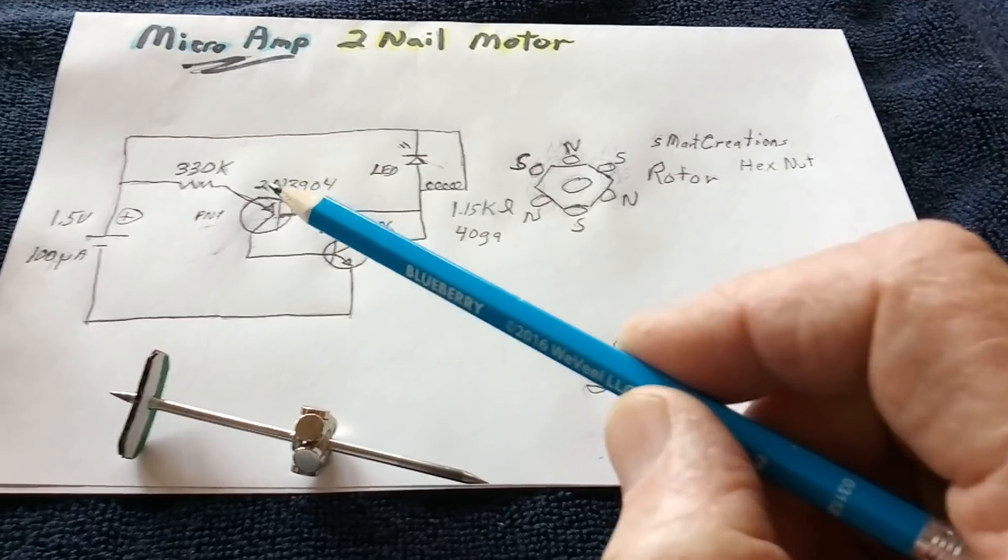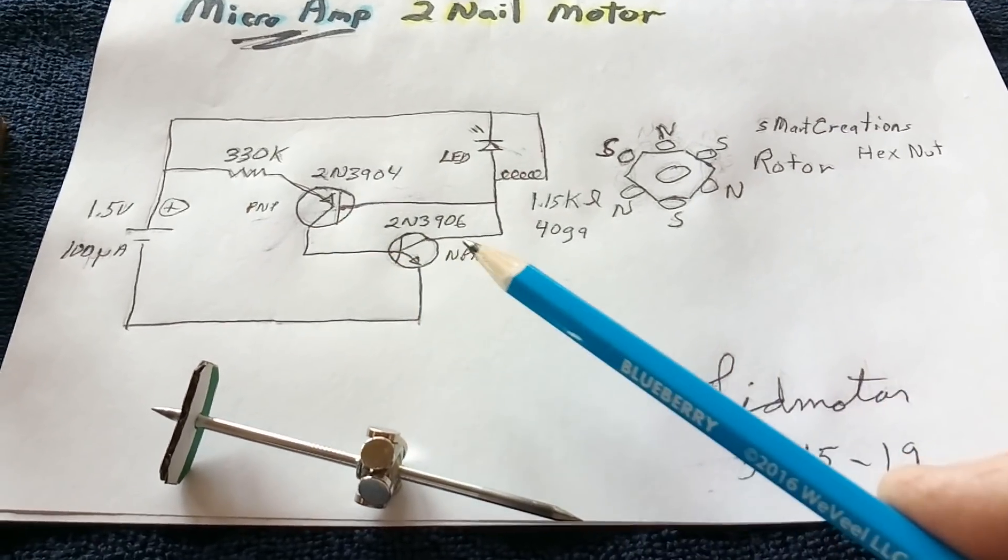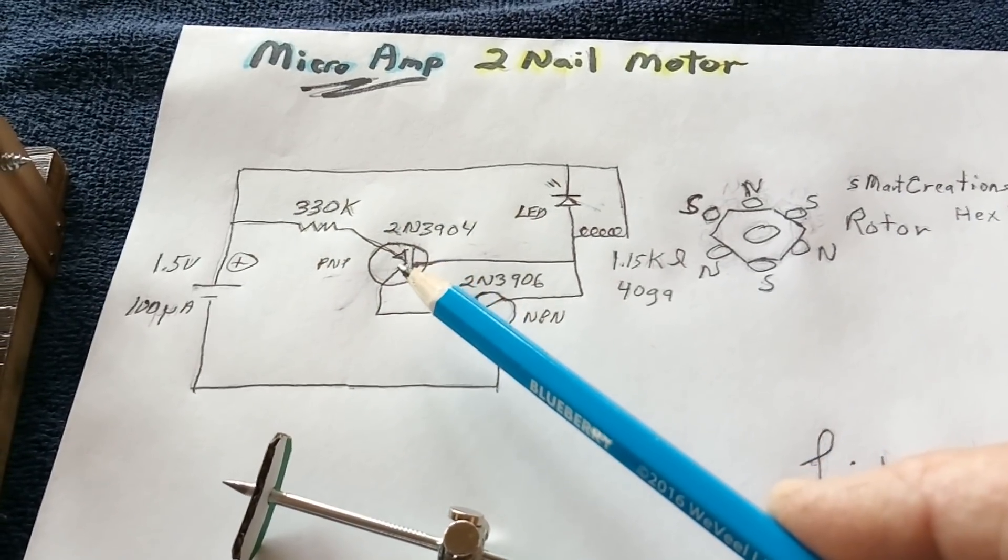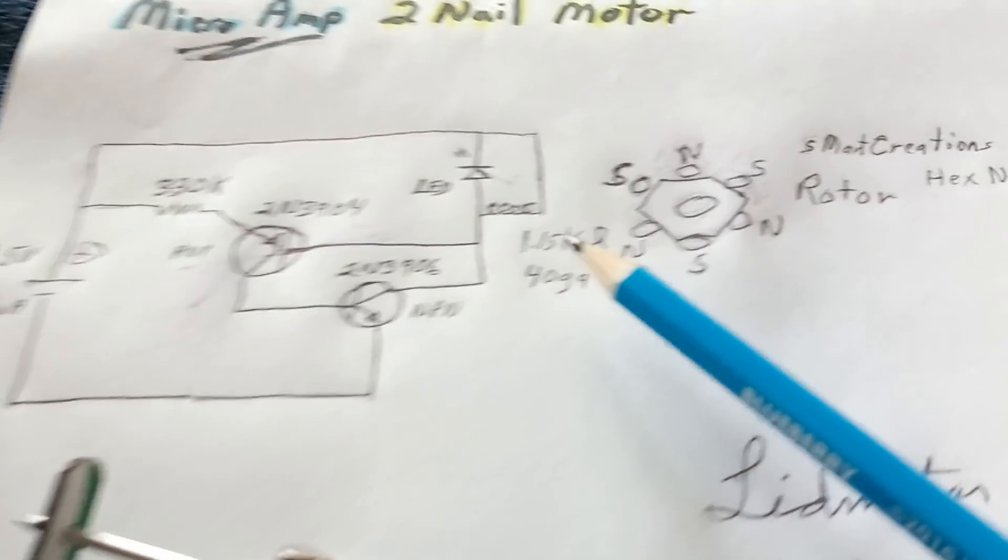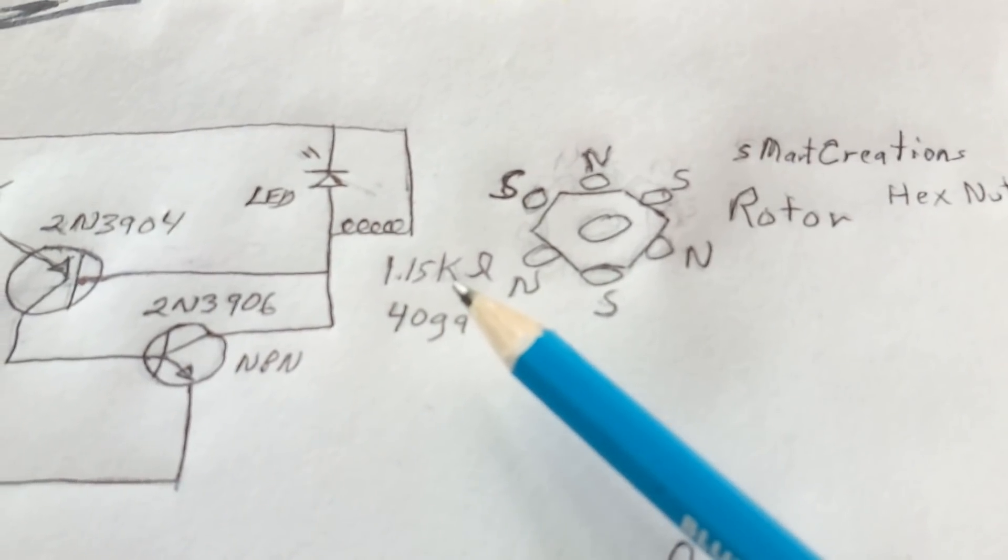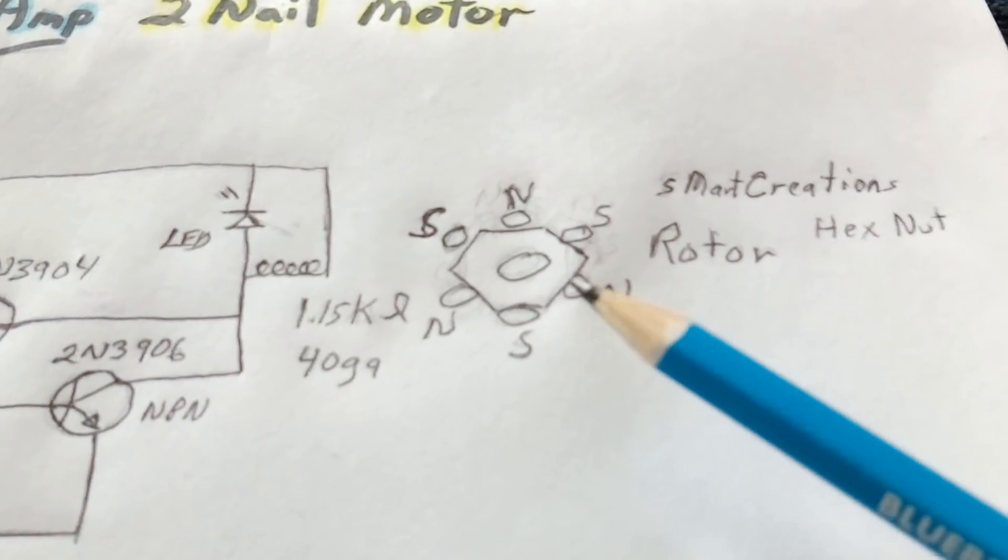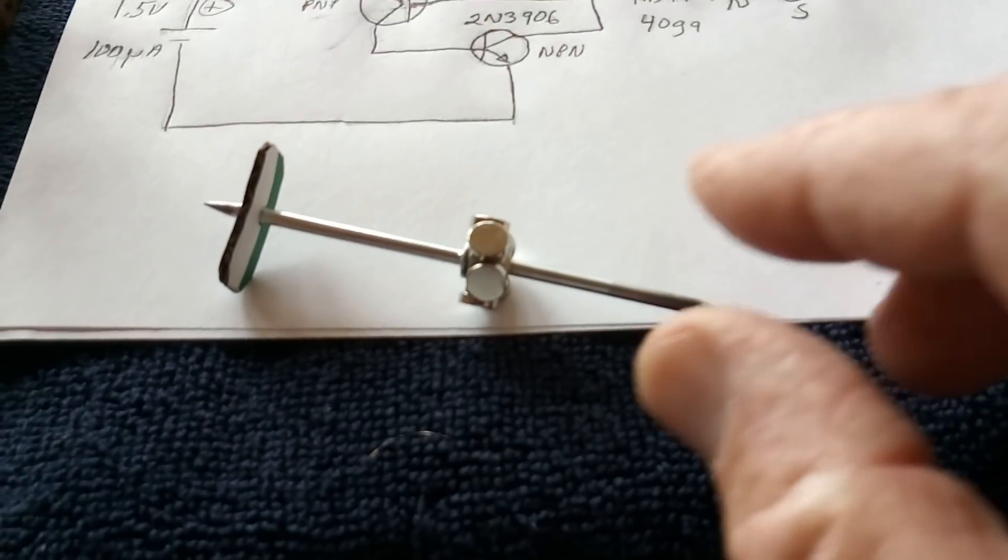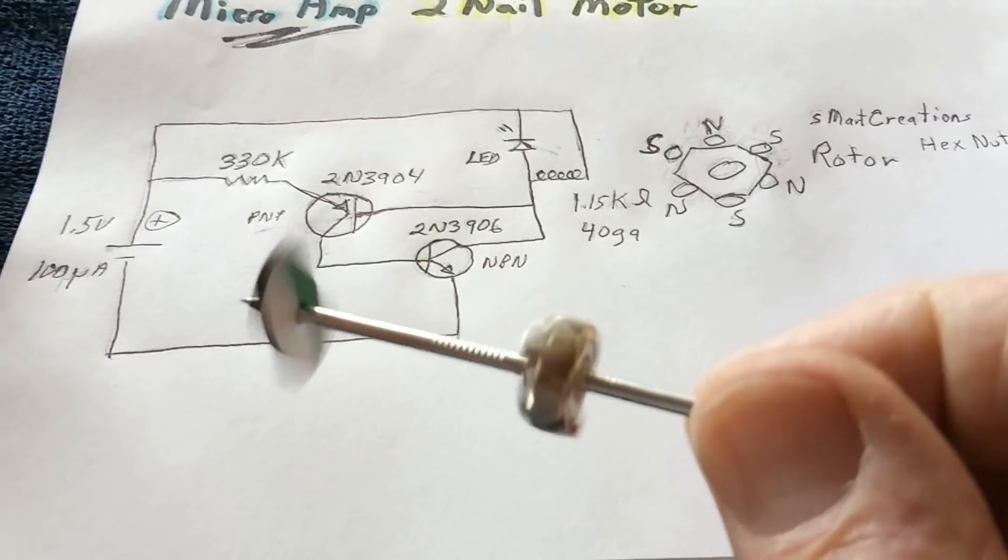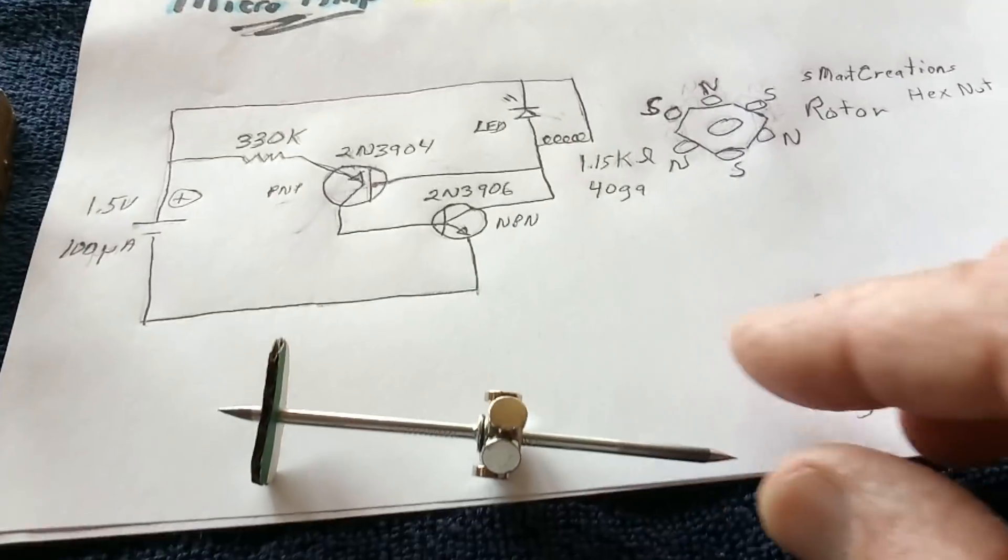It's the same complementary transistor circuit that I've shown before, NPN PNP with just a resistor going into this PNP, and then a very fine wire coil for the drive coil. It's 1.15k and then 40 gauge. And then the rotor, I went to north-south, north-south all the way around it like S Mark Creations rotor, and that turned out to be a real winner. This was the first thing I ran up last night on that circuit and it ran for five hours.